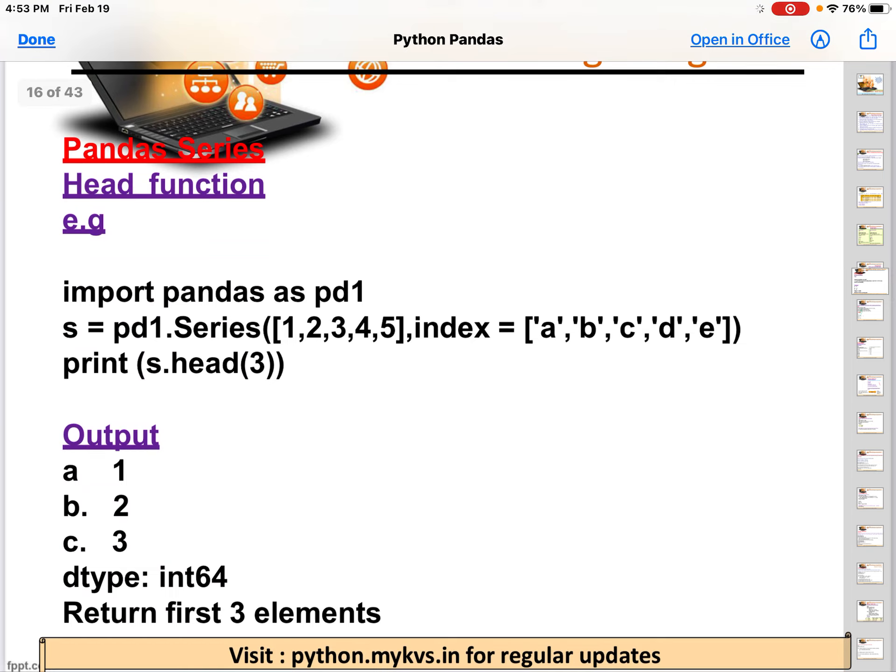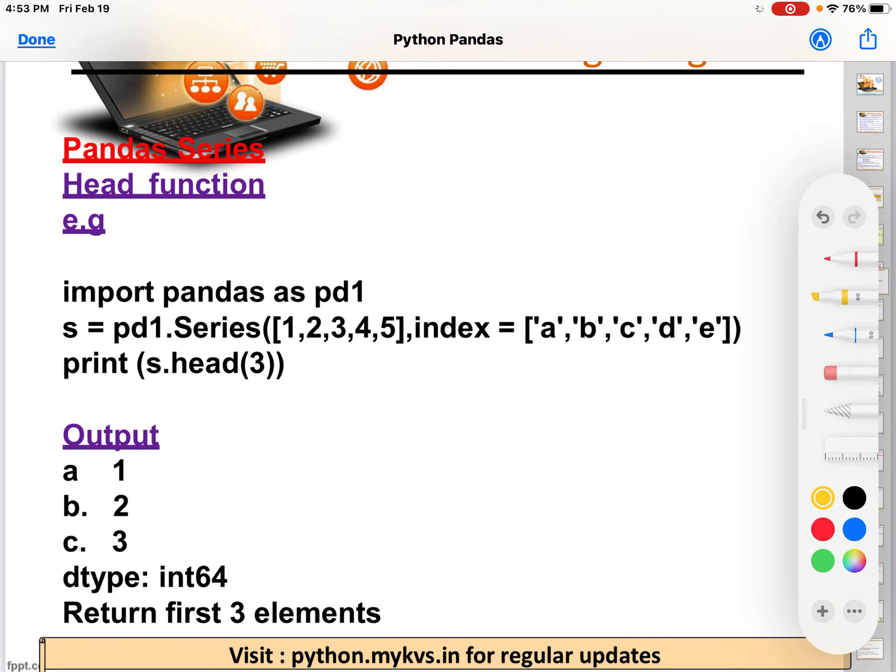Okay. Now, Pandas Series contains two major functions: head and tail. What is the role of the head function? The head function will return the topmost values from a series, or the head values from a series. Like in this, which are the head values? The values are 1, 2, 3, so the output is coming 1, 2, 3.